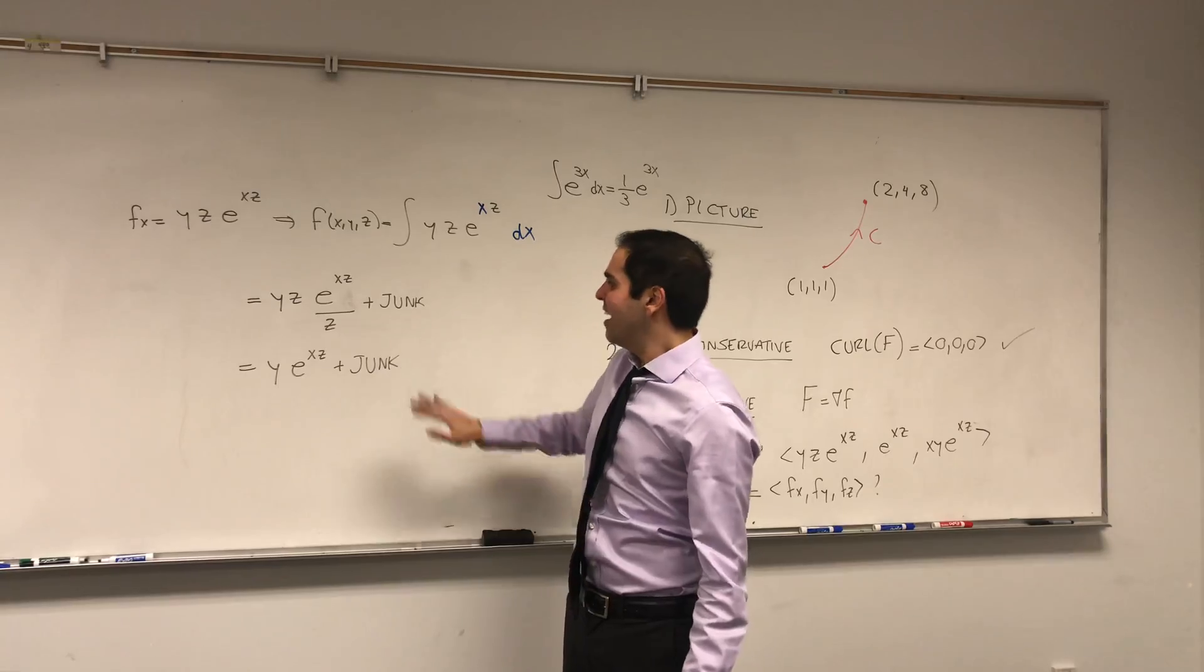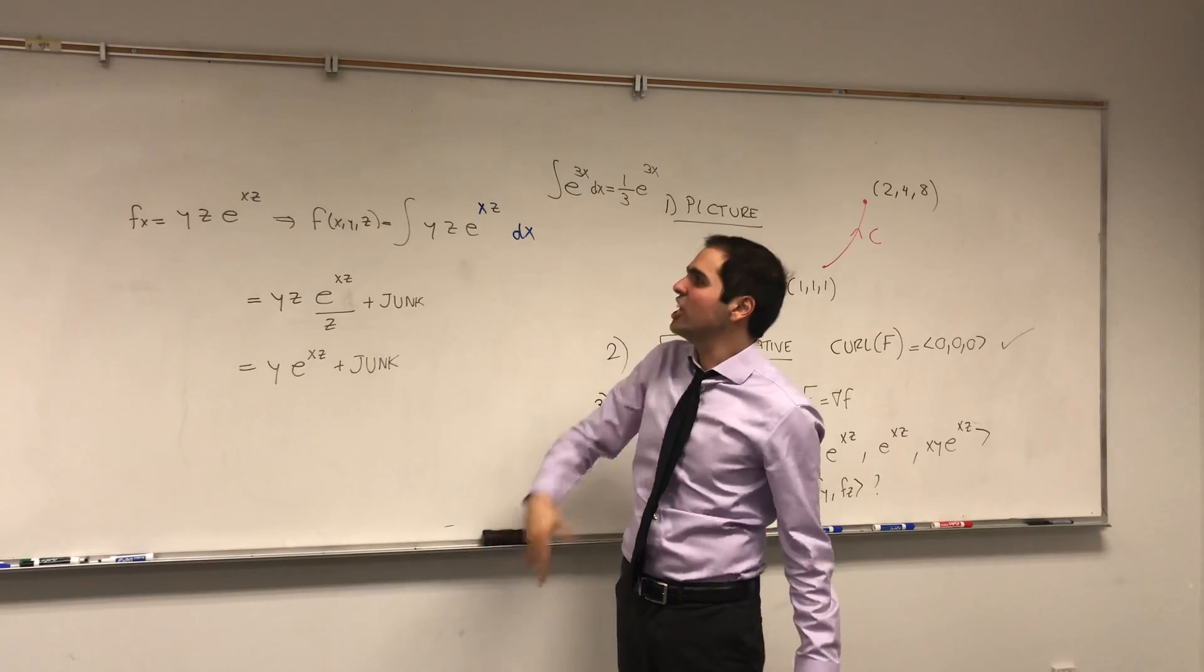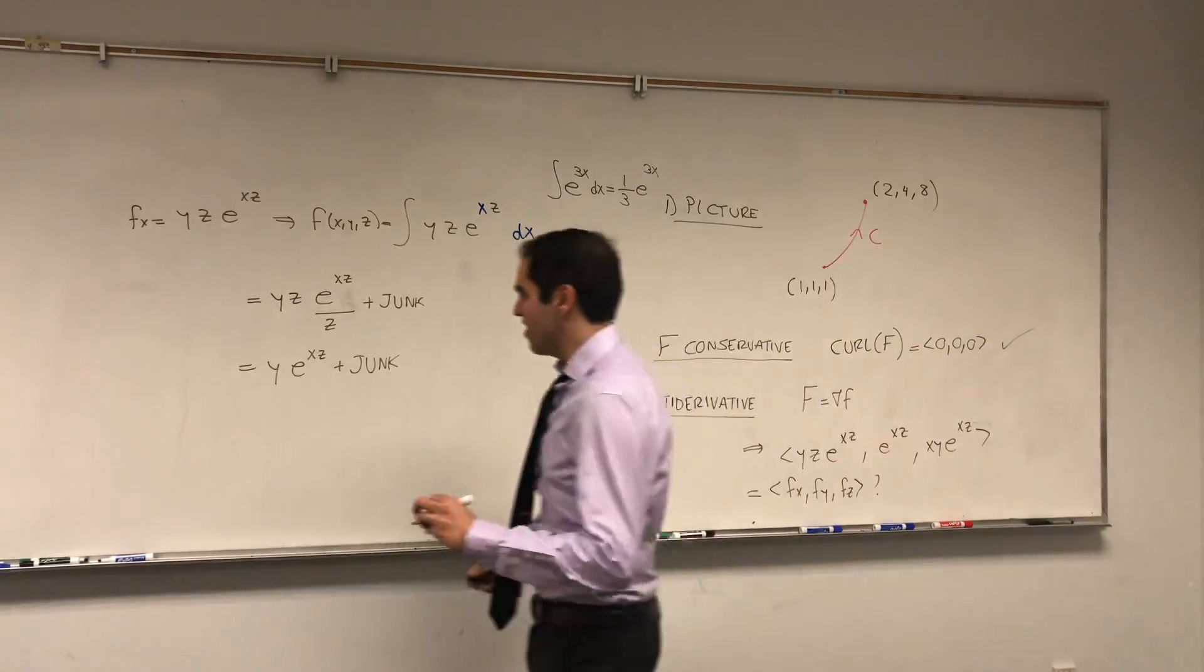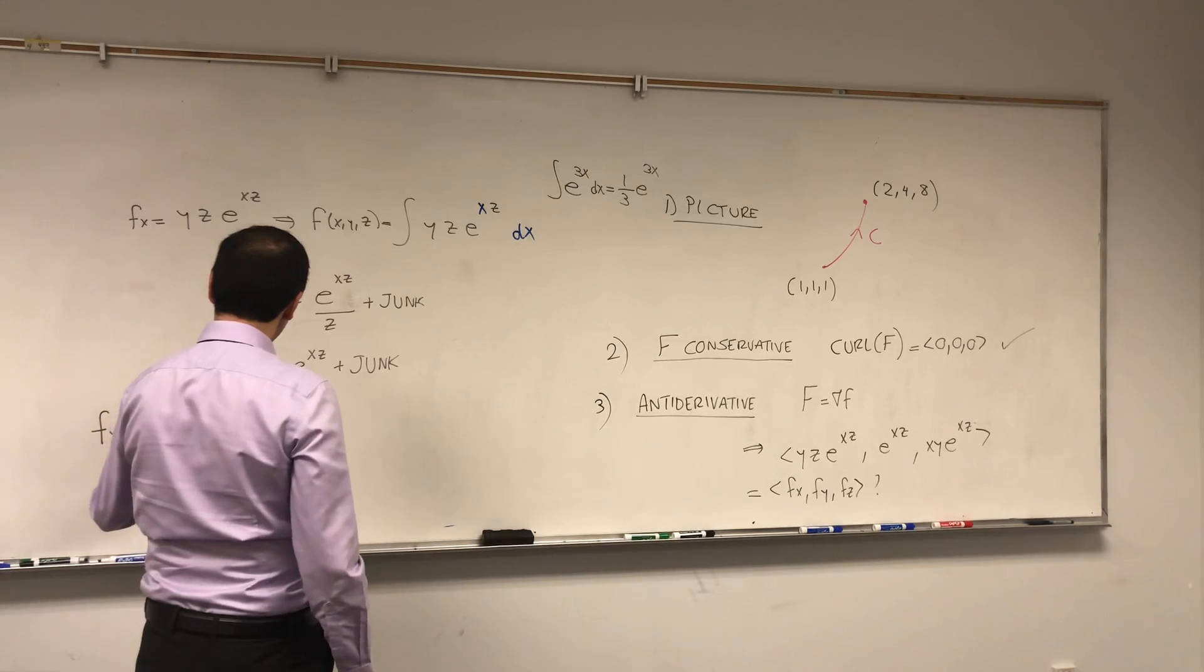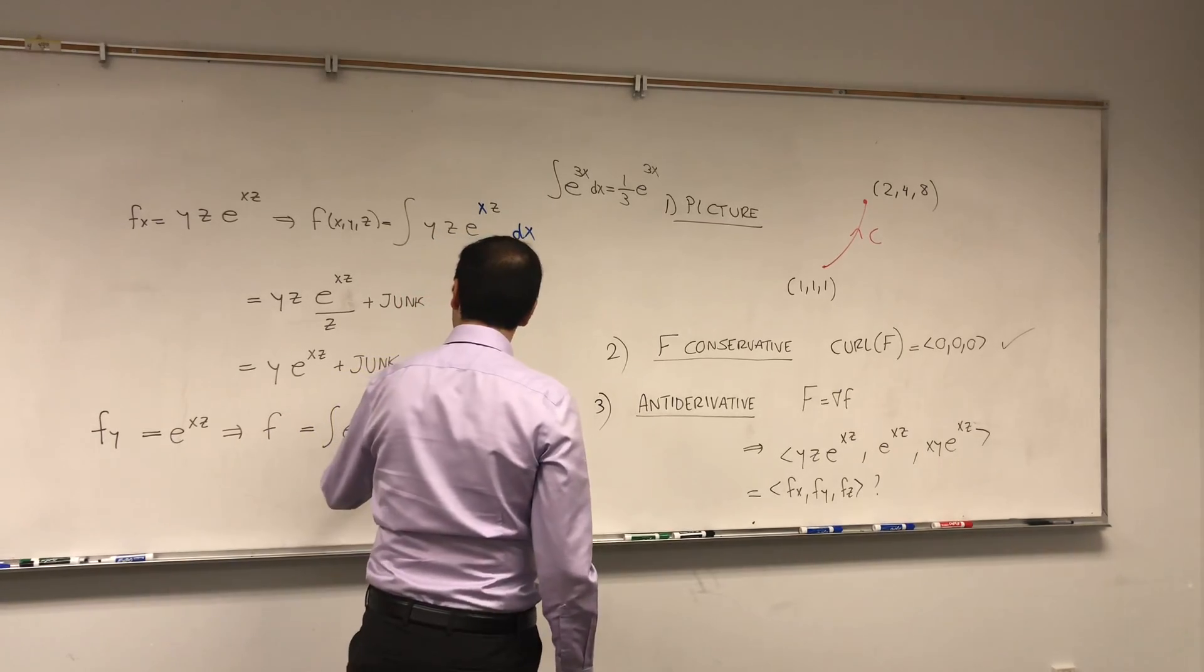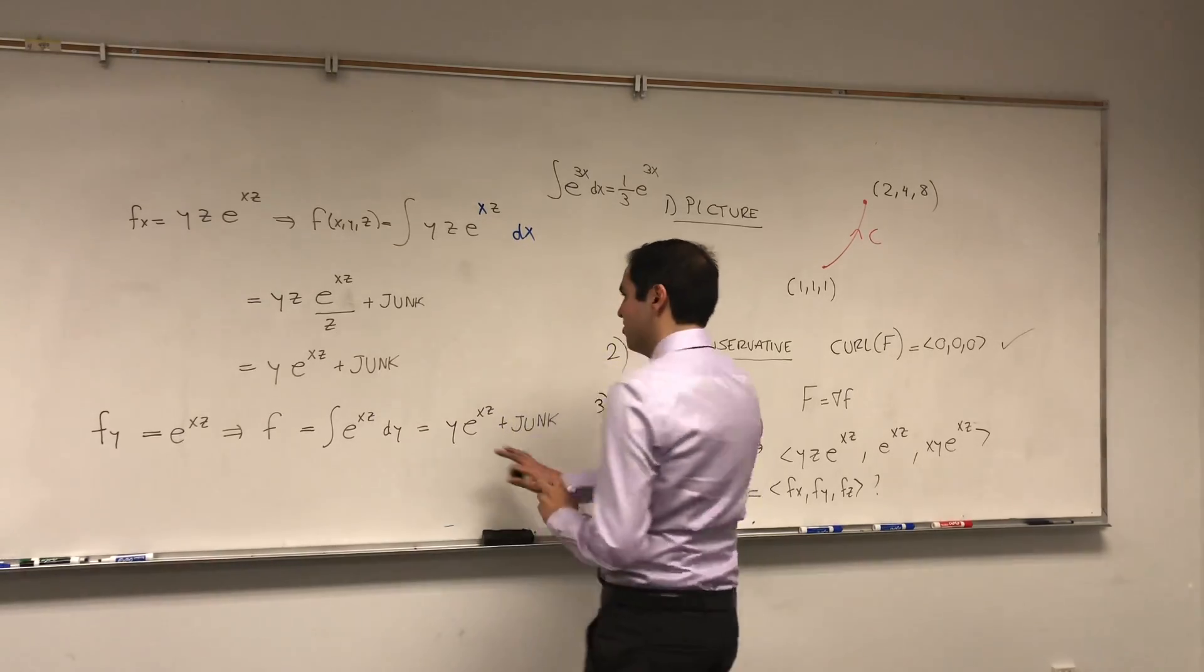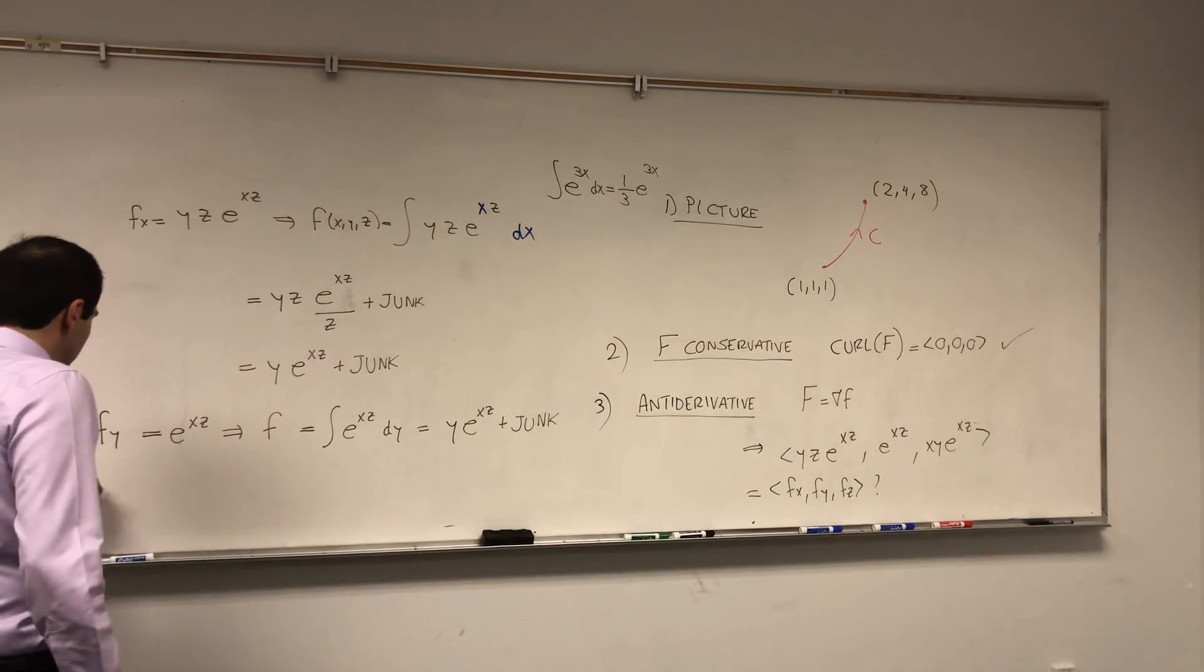Depending in this case on y and z. And as I said before, this is a bit of a non-traditional method because usually it becomes more complicated. You have some function g and then you differentiate that with respect to y. But in most cases, the examples are simple enough that you can just do it with my method, which is just proceeding. fy is e to the xz.